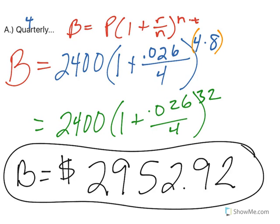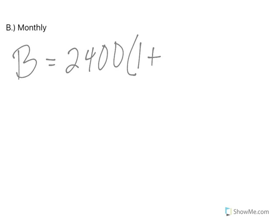All right, let's go to monthly. The formula doesn't change, it's just one number within our formula. We're still starting with 2,400, 1 plus the rate. But now we're talking about monthly, so we're dividing by 12. Then I have 12 times 8 for my exponent, because the only thing that changed was how many times a year I was compounding.